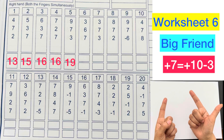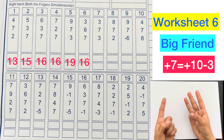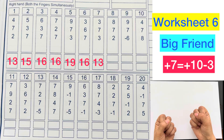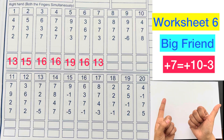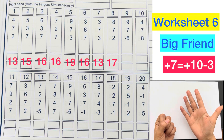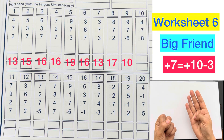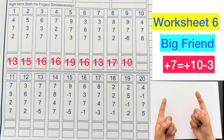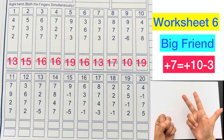3 plus 6 plus 7 plus 10 minus 3, answer is 16. 3 plus 7 plus 10 minus 3 plus 3, answer is 13. 8 plus 7 plus 10 minus 3 plus 2, answer is 17. 9 plus 7 plus 10 minus 3 minus 6, answer is 10.